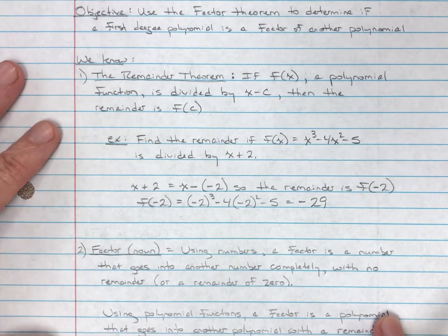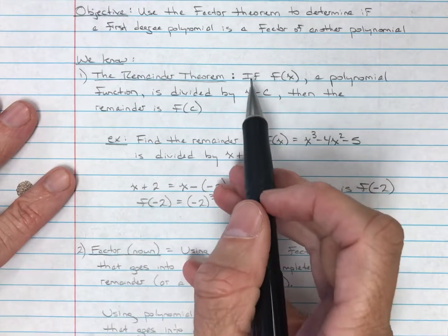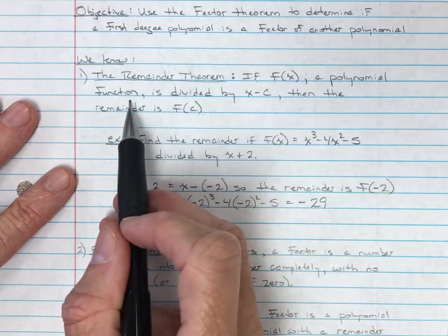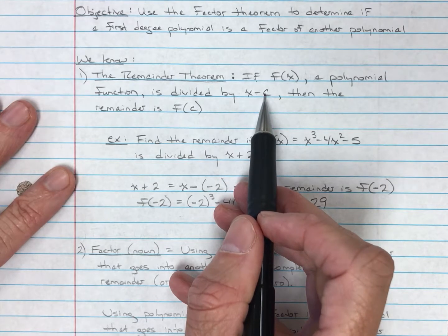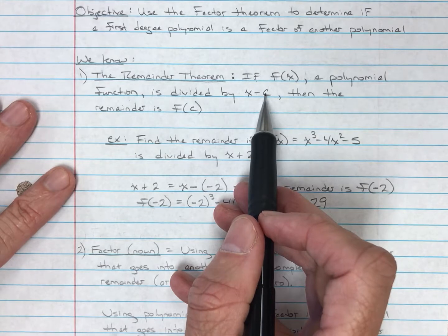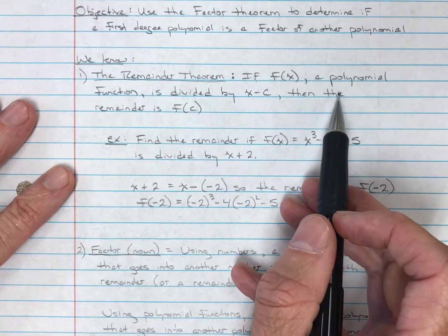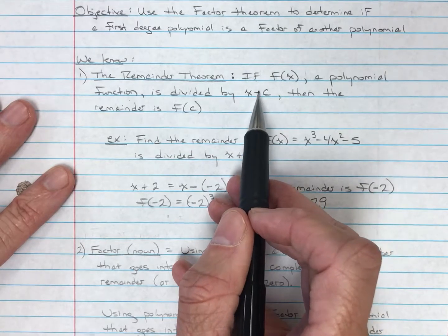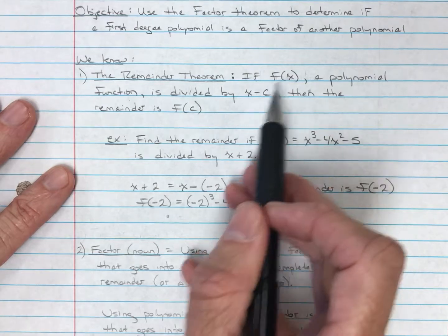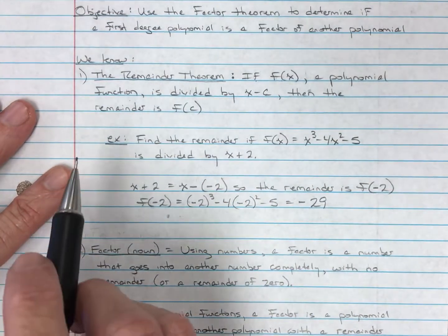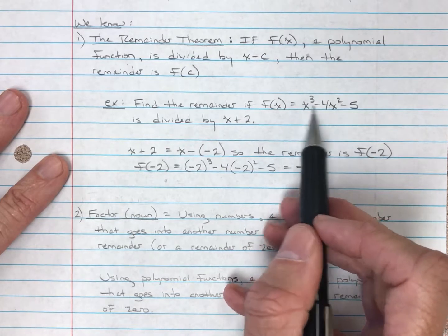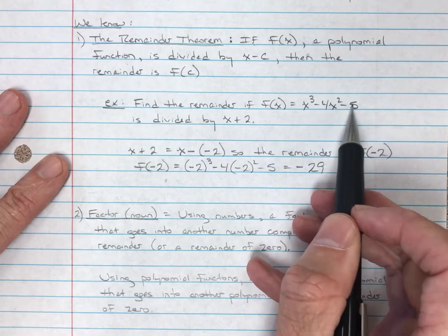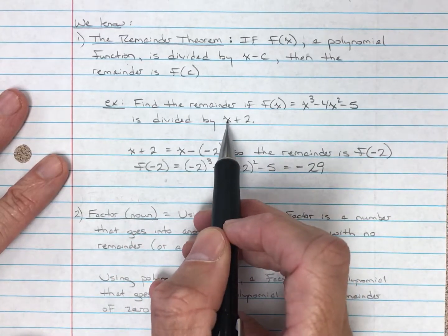Let's go back and review the remainder theorem. If f of x, which is a polynomial function, is divided by the polynomial x minus c — a first-degree polynomial — we found that we could either do the long division, or we could simply put c, the constant after the minus sign, into the f function, and the value of that is the remainder. For example, find the remainder if f of x equals x cubed minus 4x squared minus 5, and it's divided by x plus 2.